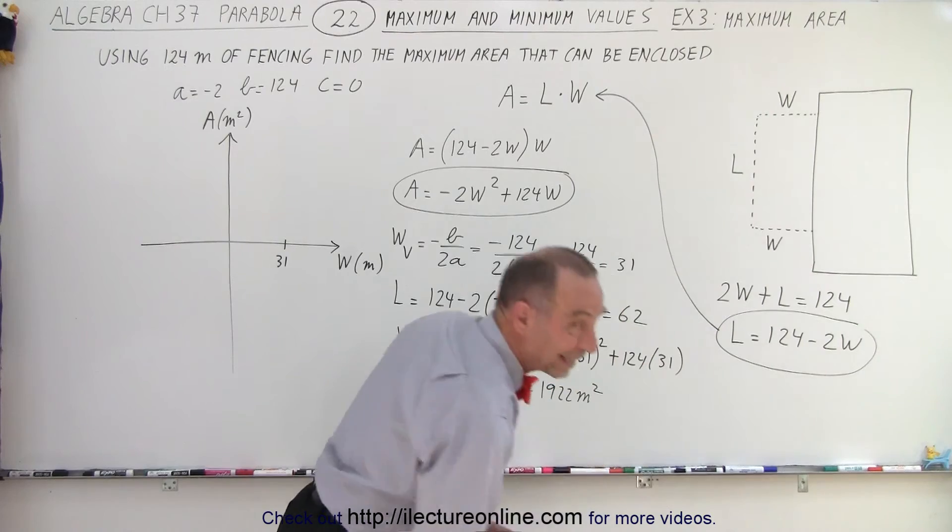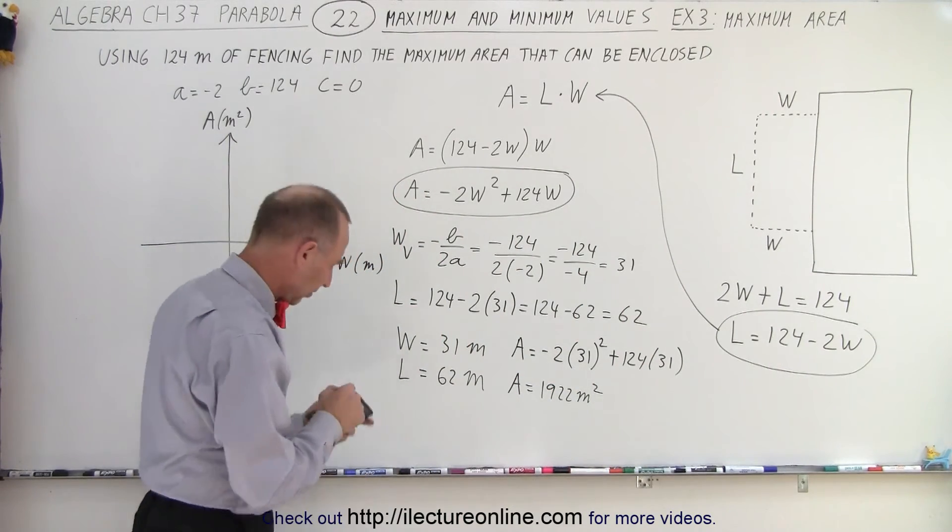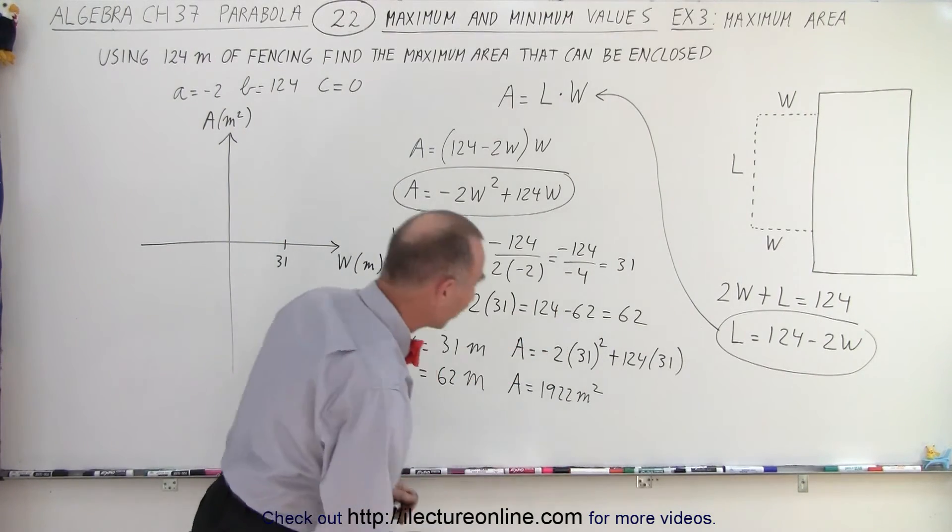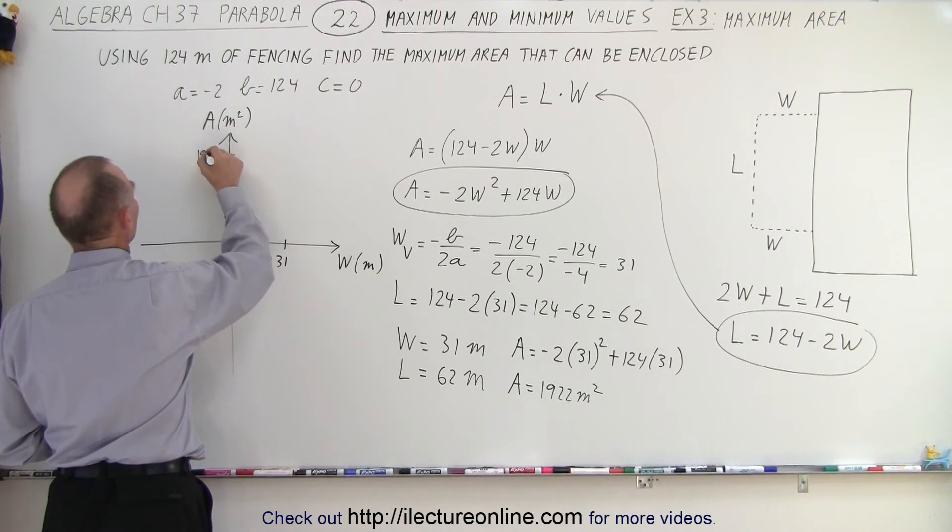I can also check that out if I multiply that out and I get the same answer. So let's try that. 62 times 31. Yes, 1,922. So that is correct. And so area 1,922.